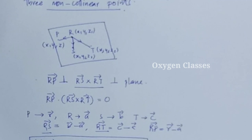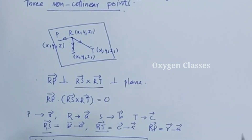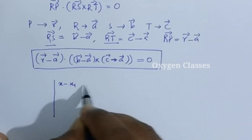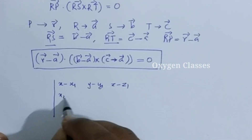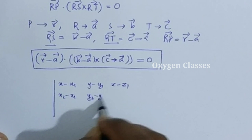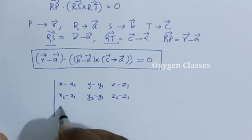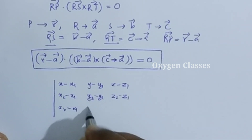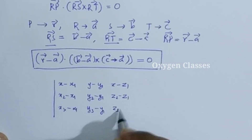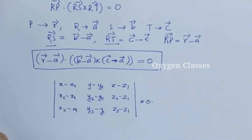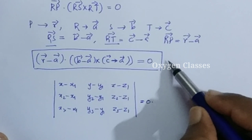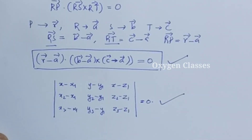The Cartesian form is the determinant: (x minus x1), (y minus y1), (z minus z1) in the first row; (x2 minus x1), (y2 minus y1), (z2 minus z1) in the second row; and (x3 minus x1), (y3 minus y1), (z3 minus z1) in the third row, all equal to 0. This is the Cartesian equation of a plane through three non-collinear points.